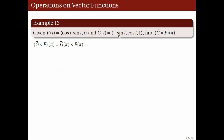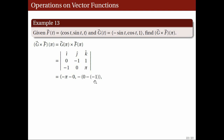G of pi is negative sine pi, cosine pi, 1, which equals 0, negative 1, 1. F of pi is cosine pi, sine pi, pi, which equals negative 1, 0, pi. The i-hat component of the cross product is negative pi minus 0, the j-hat component is the negative of 0 minus negative 1, and the k-hat component is 0 minus 1. Therefore, G cross F of pi has components negative pi, negative 1, negative 1.